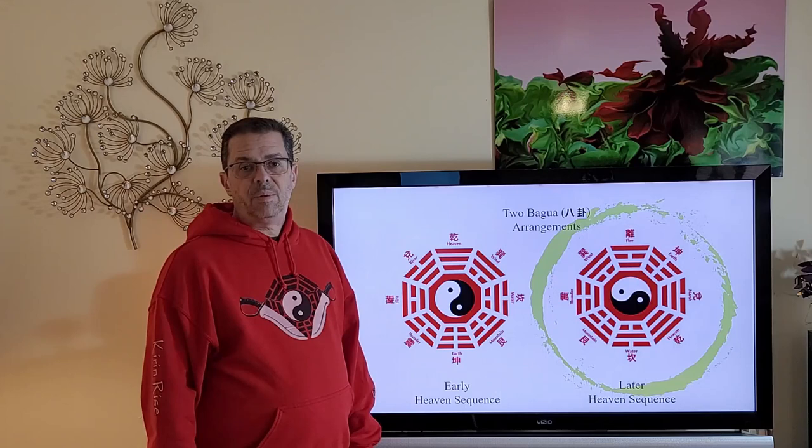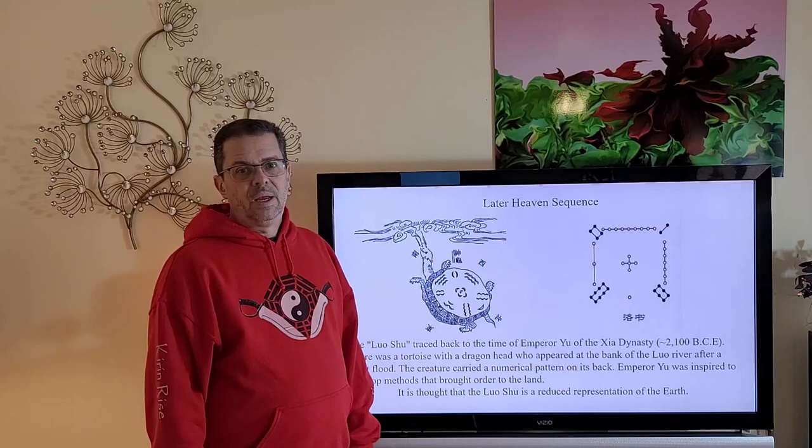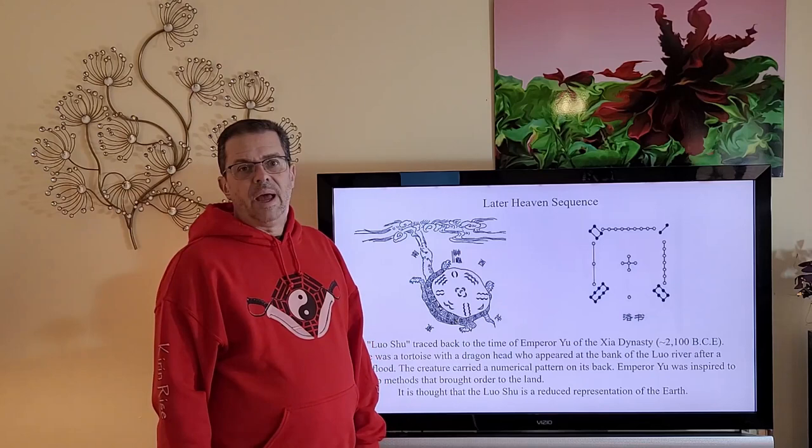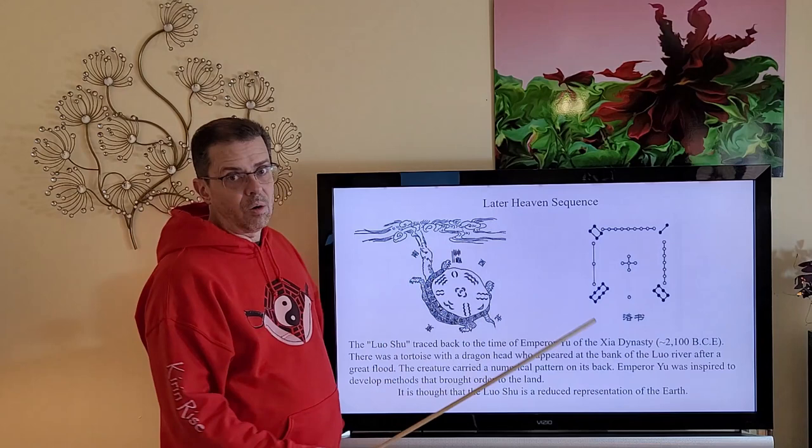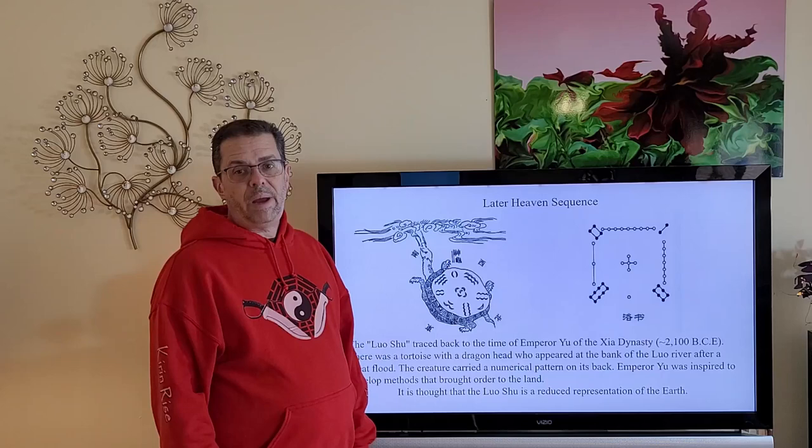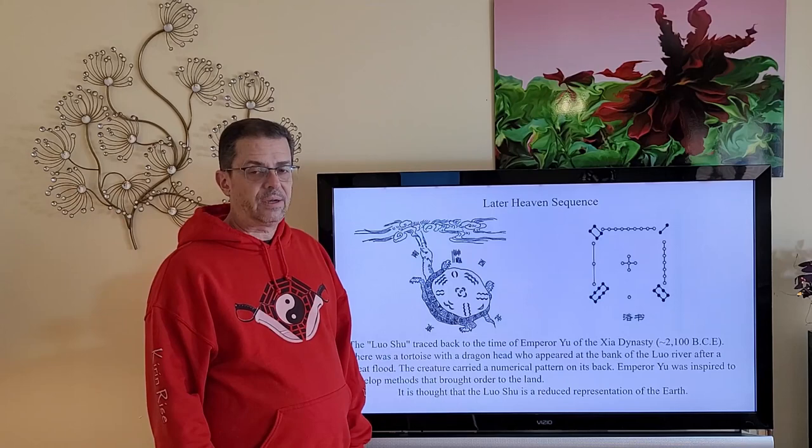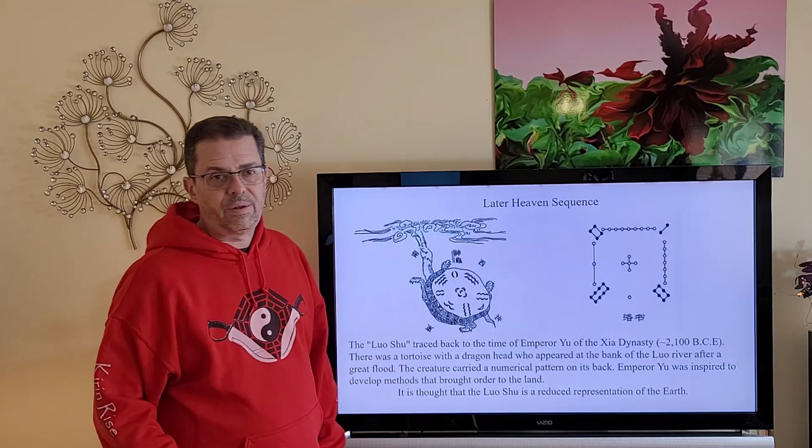If you have any questions, please feel free to leave them below. The other Bagua arrangement we frequently see is called the Later Heaven Sequence Bagua. The Later Heaven Sequence is based on the Luo Shu diagram. As the story goes, there was a tortoise with the head of a dragon who appeared at the bank of the Luo River, and it was during a time of Great Flooding. The animal had a numerical pattern on its back which inspired Emperor Yu to develop methods that brought order back to the land.